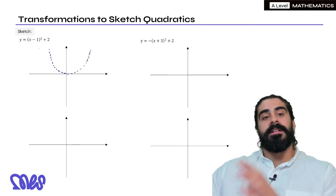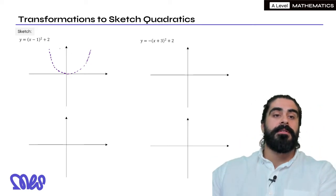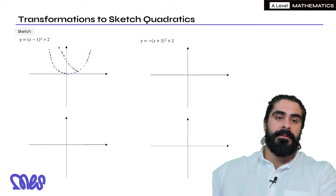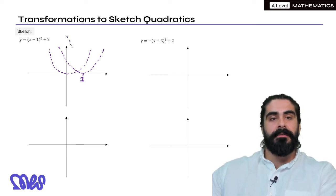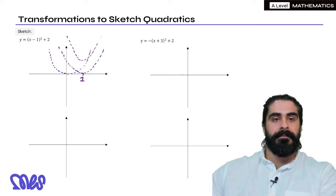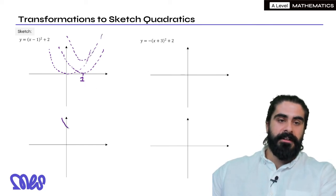Now x-1 we said it's going to shift to the right by 1. So we're going to go to the right by 1. Then that 2 is going to shift it up by 2. So overall on our final picture it's going to look like this. We have 1 here and then we have 2.